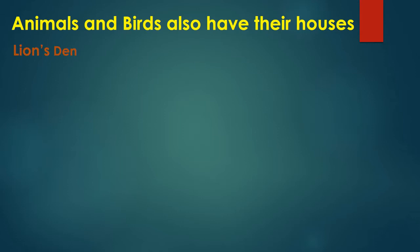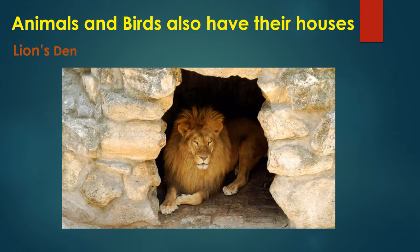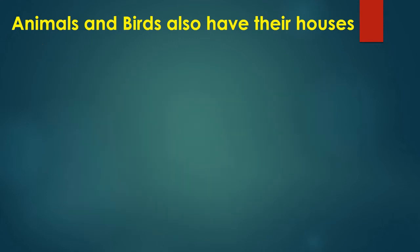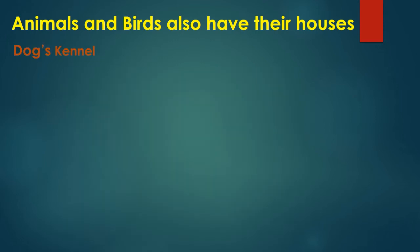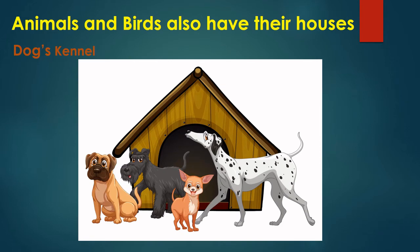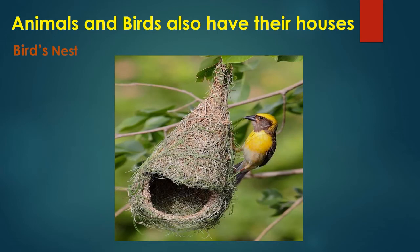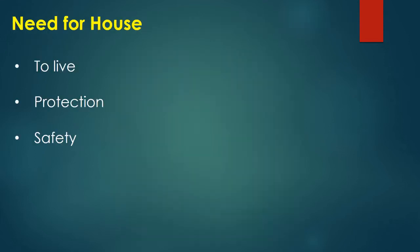The second animal is lion. Lion is the king of the jungle and lives in his den. The third animal is horse — horse lives in a stable. The fourth animal is dog — dog lives with her puppy in a kennel. And finally, birds also build their nest to take care of the little ones.